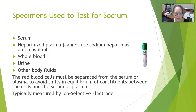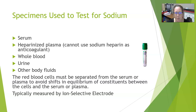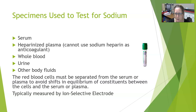The specimens used to test for sodium include serum, typically in a red top tube, and heparinized plasma in a green top — but you cannot use sodium heparin; you must use lithium heparin, because using sodium heparin would contaminate the sample with sodium and give inaccurate readings. It can also be done on whole blood for point-of-care testing, and on urine and other body fluids. Red cells must be separated from the serum or plasma to avoid shifts in equilibrium of these constituents between cells and serum or plasma. Sodium is typically measured by ion-selective electrode in the laboratory.